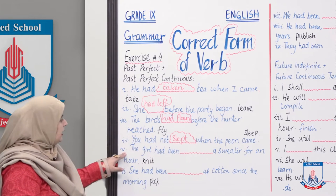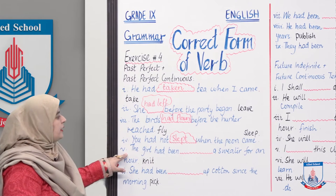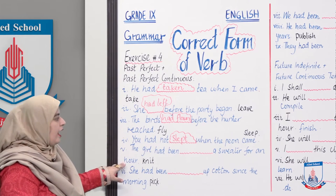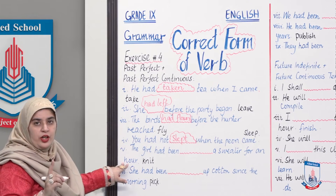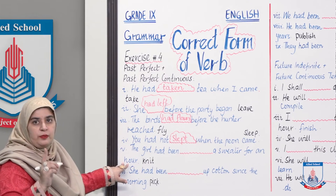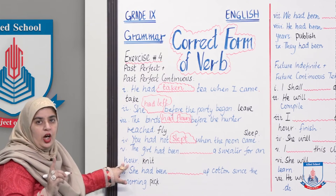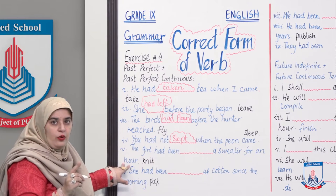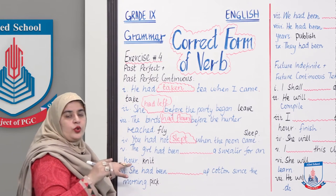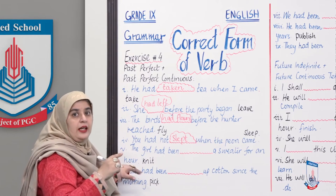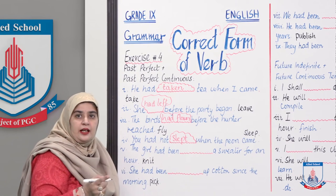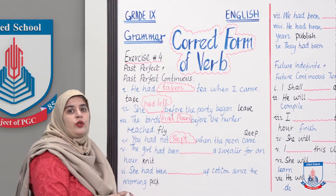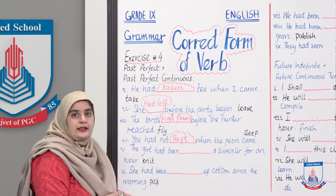'The girl had been ___ a sweater for an hour.' Now this is what the girl had been doing — a continuous action. Jo kaam continuously ho raha ho, jo take place karta raha ho, woh hota hai continuous tense.